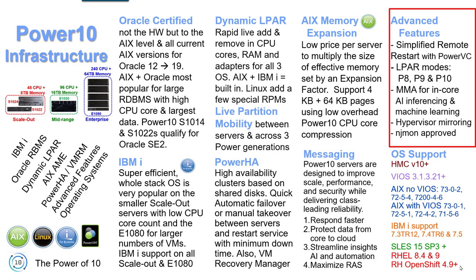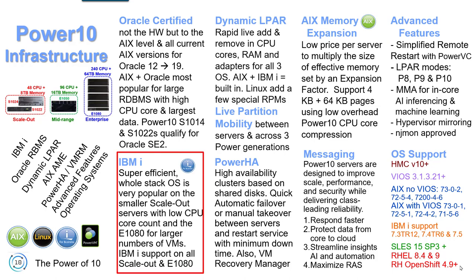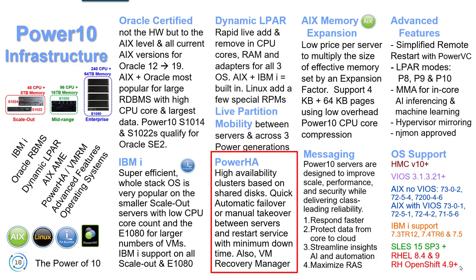NJMon — my favourite performance tool since I write it — has been approved for Power 10. The hypervisor mirroring in memory, previously only for the big machines, is now across the entire range. IBM i is a super-efficient whole-stack operating system, very popular with the scale-out models — often used for accounts, customer management, or websites, though some larger customers run IBM i on E1080s with large numbers of virtual machines. For Power HA — or HACMP as the older folks call it — it requires shared disk technology but allows quick automatic failover or manual takeover between servers with minimum downtime, also supporting workload migration during maintenance. It comes with Virtual Machine Recovery Manager for more options.